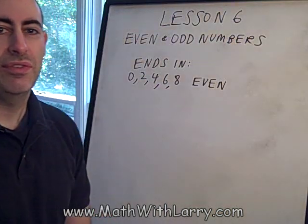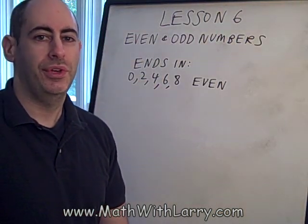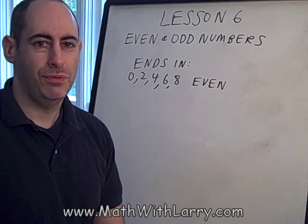And you can probably guess that if the number ends with 1, 3, 5, 7, or 9, it's considered to be an odd number.